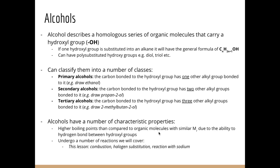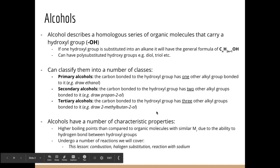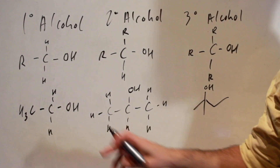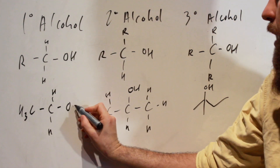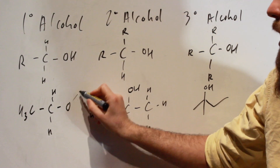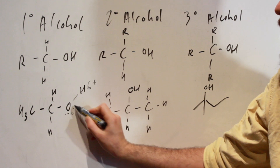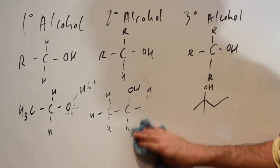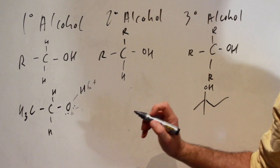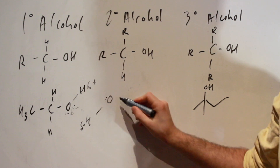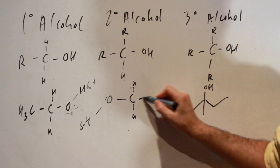Alcohols have a number of characteristic properties as a homologous series — they share not only a functional group but because of that they have similar properties. They have higher boiling points compared to organic molecules with similar relative molecular mass, due to the ability to hydrogen bond between the hydroxyl groups. The hydroxyl group has a delta-negative on the oxygen and a delta-positive on the hydrogen, with lone pairs of electrons on the oxygen. We can form a hydrogen bond between that and another alcohol molecule.